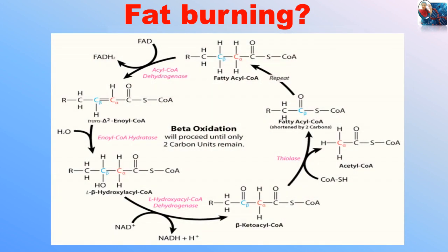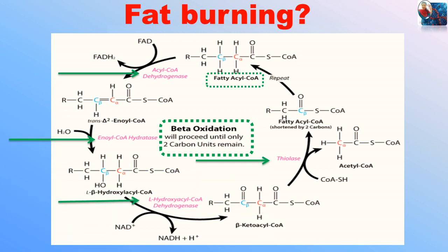So what is burning of fat? It is nothing but beta oxidation of fatty acids. Fats are broken into fatty acids in the presence of lipase enzymes. Fatty acids then undergo a four-step reaction to produce one acetyl coenzyme A and an acyl coenzyme A with two less carbon atoms. The cycle is repeated again and again until the fatty acids are completely broken down into acetyl coenzyme A.